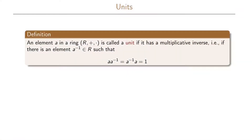Units are specific elements in a ring. An element a in a ring R with the multiplication and addition operations is called a unit if it has a multiplicative inverse. That means there is an element, denoted a to the minus 1, which is in the set R, such that a times a to the minus 1 equals a to the minus 1 times a, which equals 1.